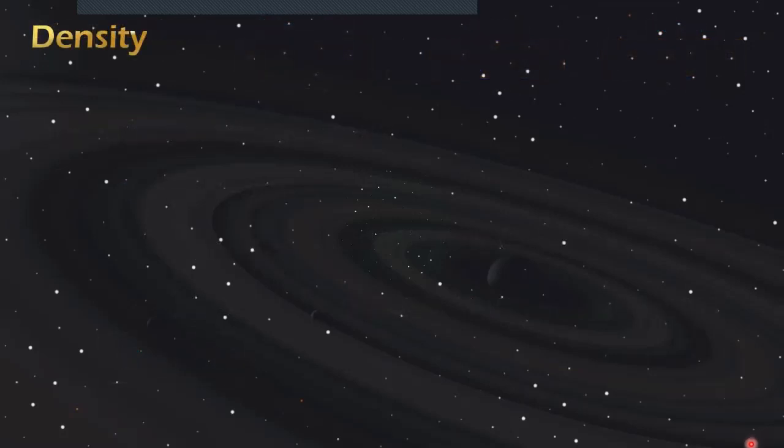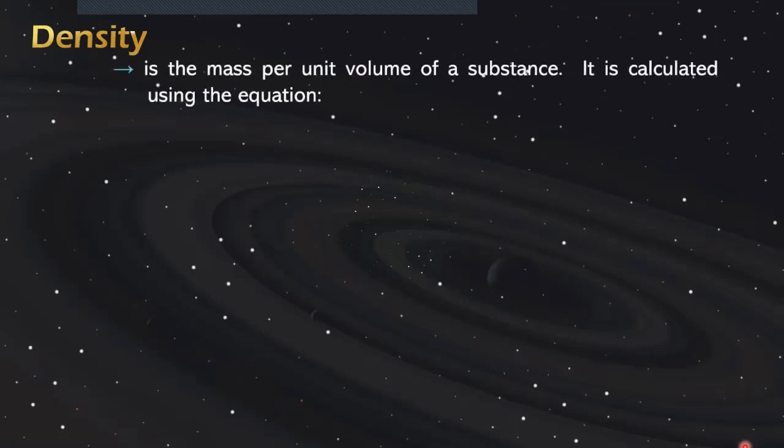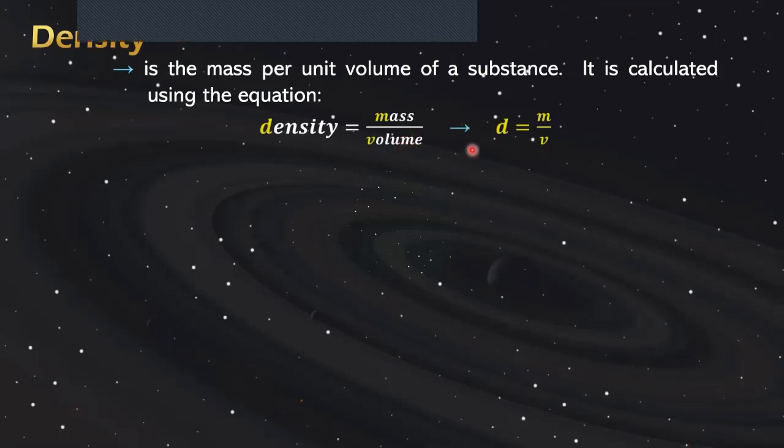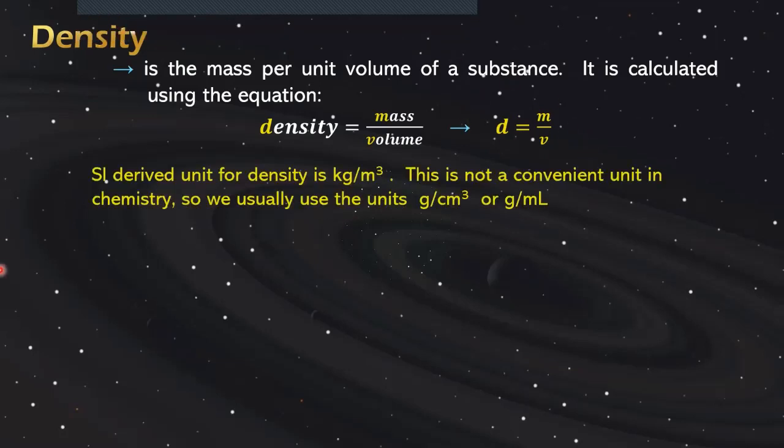Now we are down to the last topic, which is density. Density is the mass per unit volume of a substance. It is calculated using the equation: density equals mass over volume. The SI derived unit for density is kilogram per cubic meter, but we usually use the units gram per cubic centimeter or gram per milliliter.